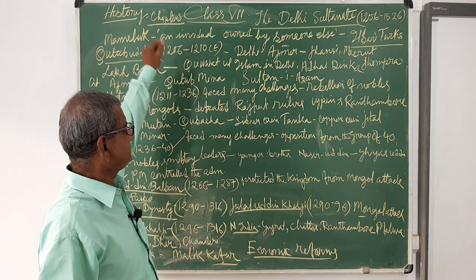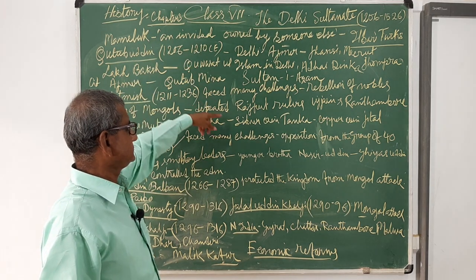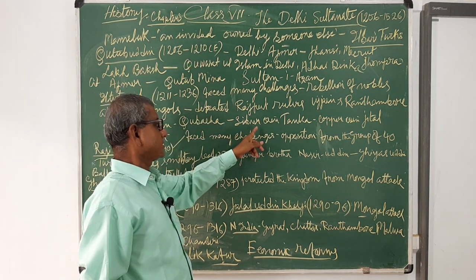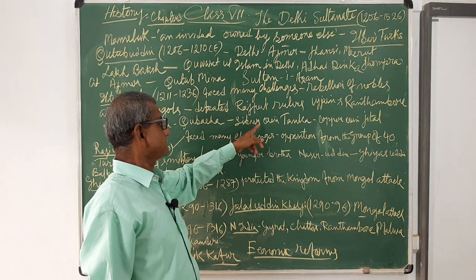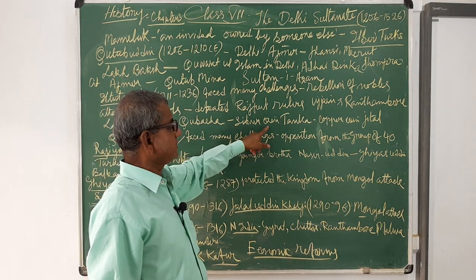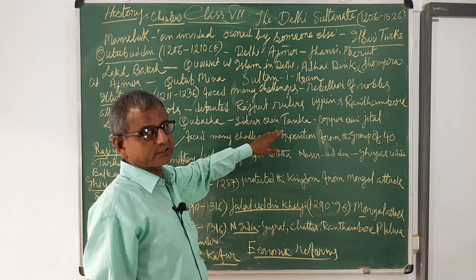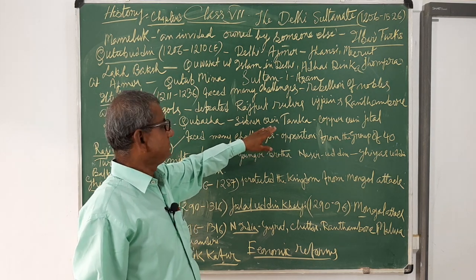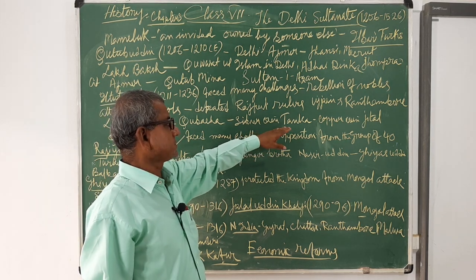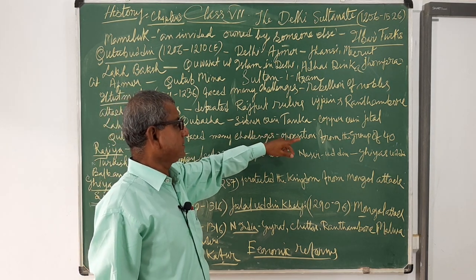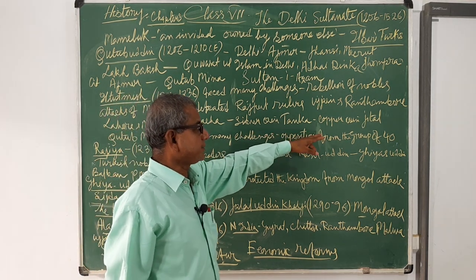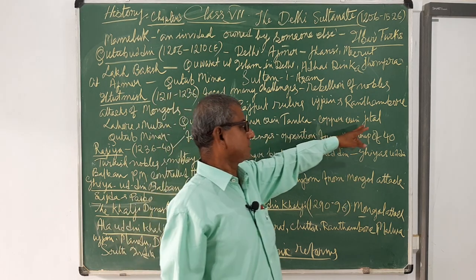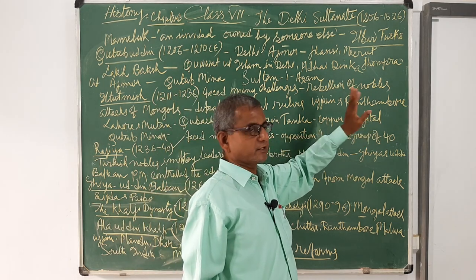He introduced currency reforms, issuing silver coins called Tanka and copper coins called Jital.